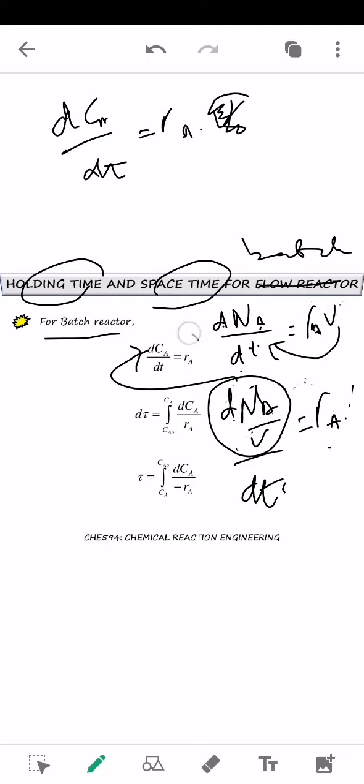So dNA over V ni bersamaan dengan dC ni. So bila you dah ada mole balance ni, kalau kita nak cari holding time dia which is dt. So, ni t bukan tau. So, kita tinggalkan dt. So, kita rearrange dC over rA.